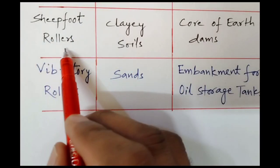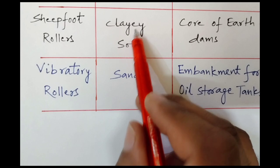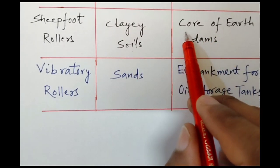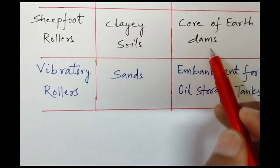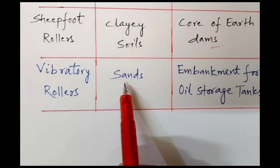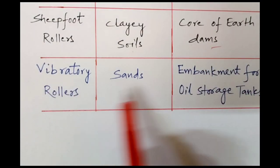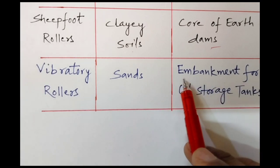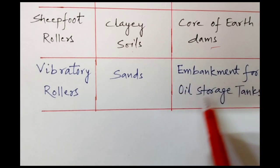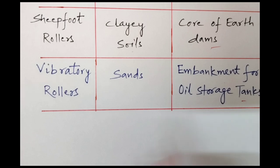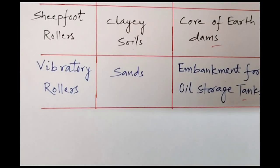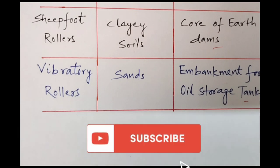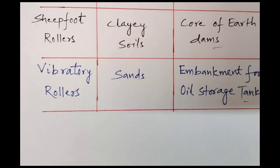Sheepfoot rollers are suitable for clayey soil and are used for the compaction of the core of earth dams. Vibratory rollers are used for sands and are used in embankments for oil storage tanks. So these are the different types of rollers used for different types of soils.